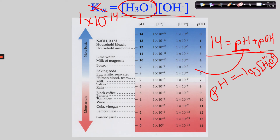Why is pH anchored at 14? Because our baseline is pure water — that's our starting point. From there, you can range away by adding acids or bases. But our frame of reference is pure water, and that's why pH plus pOH equals 14.